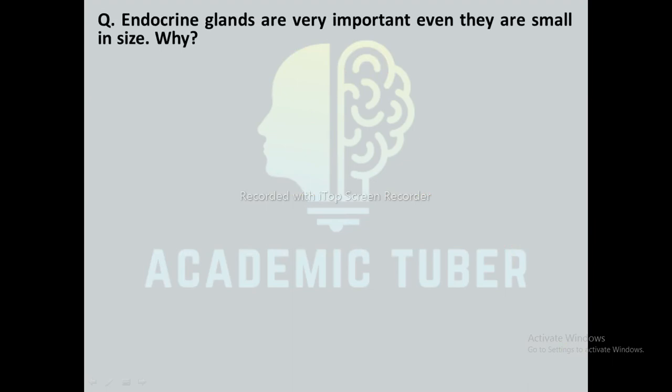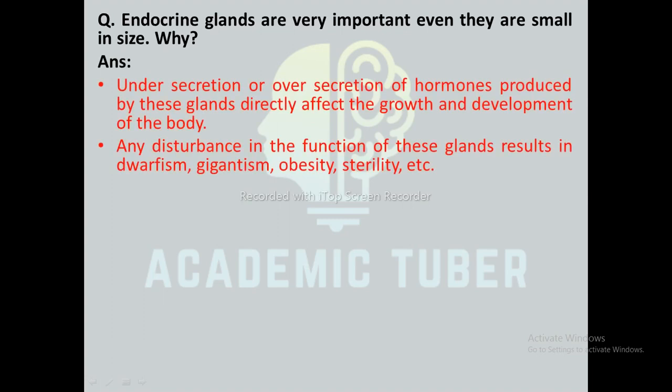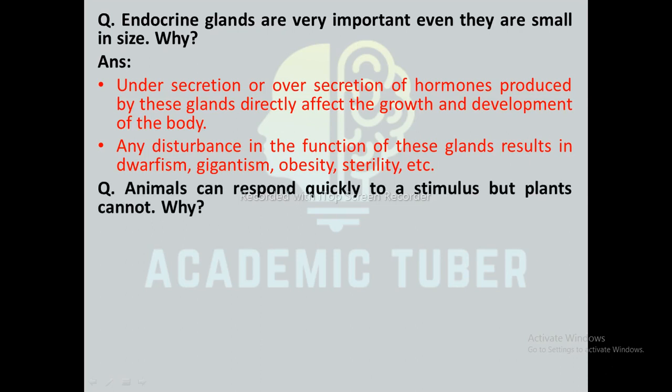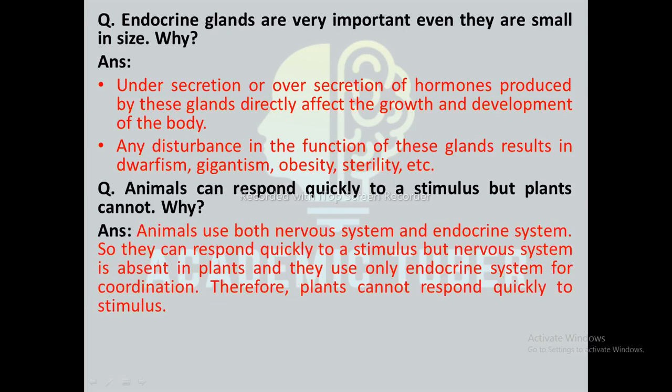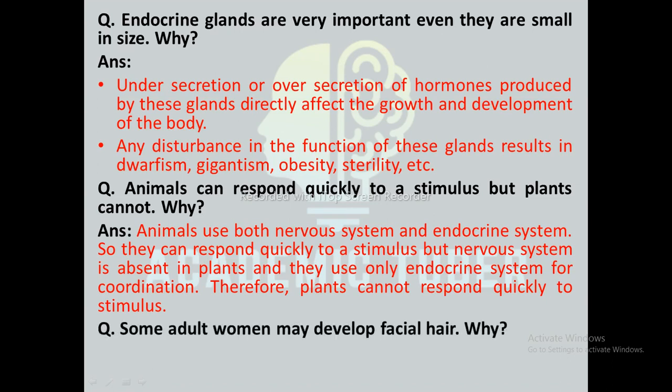Endocrine glands are very important even though they are small in size, because under-secretion or over-secretion of hormones directly affects the growth and development of the body. Any disturbance in the function of these glands results in conditions like dwarfism, gigantism, obesity, or hysteria. Animals can respond quickly to a stimulus because they use both the nervous system and the endocrine system. Plants lack a nervous system and use only the endocrine system for coordination, so they cannot respond as quickly to a stimulus.